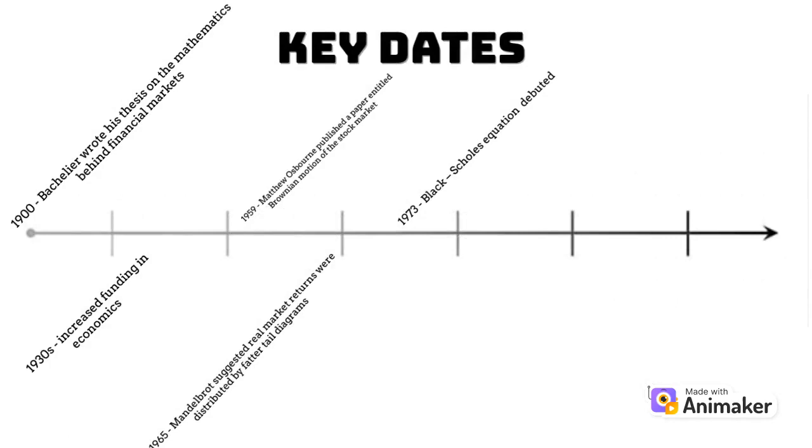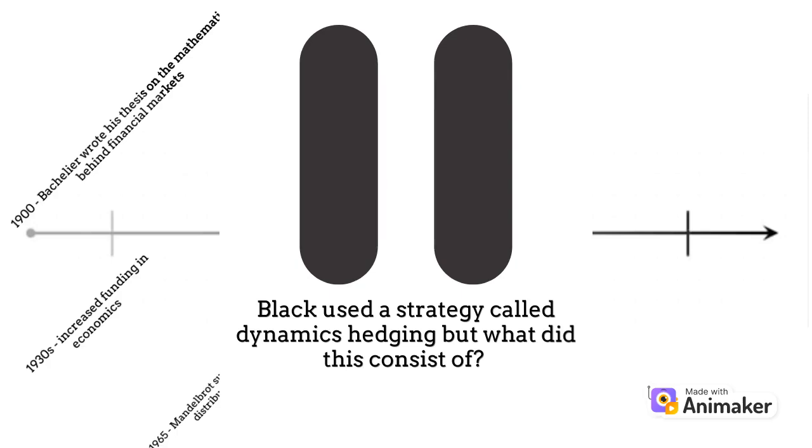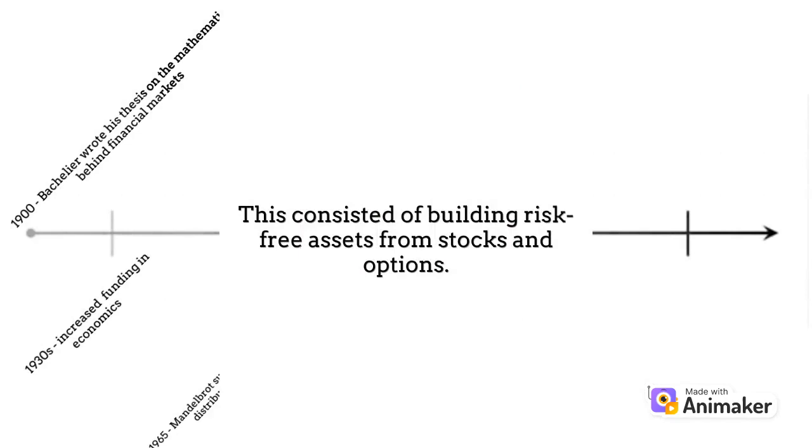Black used a strategy called dynamic hedging, but what did this consist of? This consisted of building risk-free assets from stocks and options.